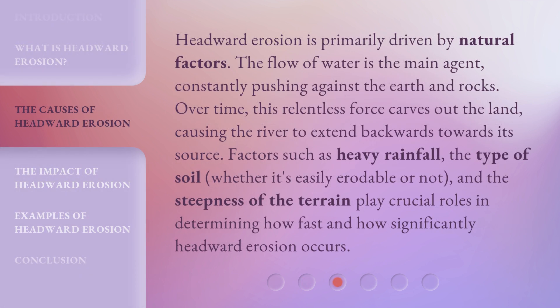Headward erosion is primarily driven by natural factors. The flow of water is the main agent, constantly pushing against the earth and rocks. Over time, this relentless force carves out the land, causing the river to extend backwards towards its source. Factors such as heavy rainfall, the type of soil — whether it's easily erodible or not — and the steepness of the terrain play crucial roles in determining how fast and how significantly headward erosion occurs.